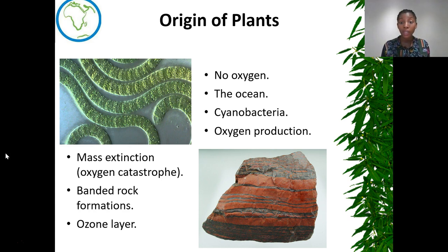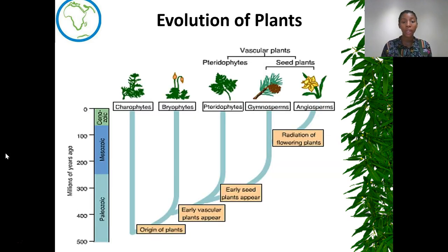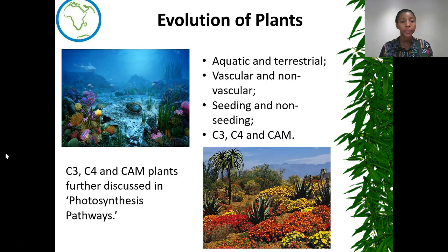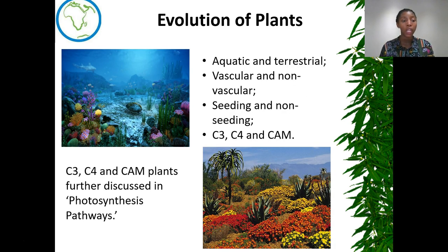Now that there was an ozone layer to shield out the harsh UV radiation, terrestrial life became possible — meaning even plants could seek out new territories and evolved into land plants. Plants have different classifications. We'll hear about C3, C4, and CAM plants, which is a classification based on how plants metabolize carbon dioxide and water to give off oxygen and carbohydrates, but we'll learn about this in the later slides.